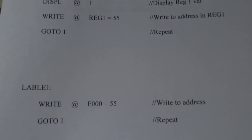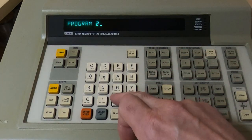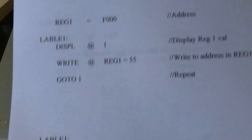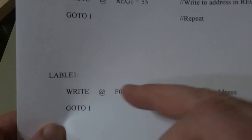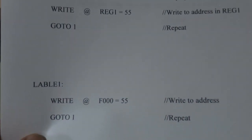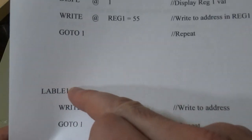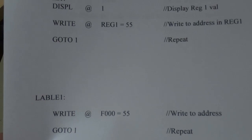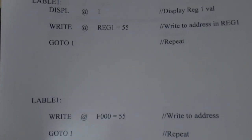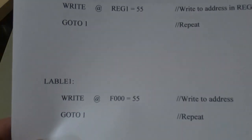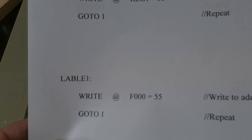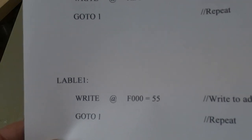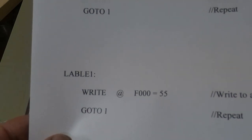The first thing we need to do is create the program - we'll call this Program 2. We've created Program 2, and then we need to generate a label. A label is just a position in the program that we can subsequently jump back to - it's an entry point. They can be in any order you want; you don't need to go Label 1, Label 2 sequentially through the program. Labels can be repeated in different programs - a particular label in one program is not visible to other programs.